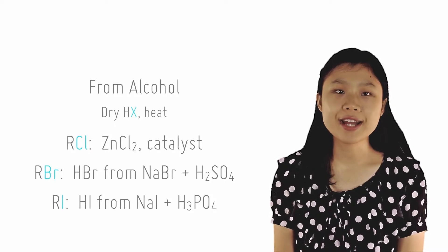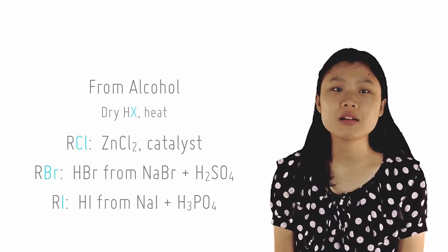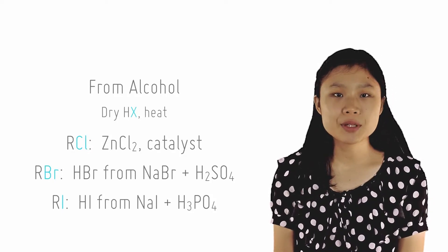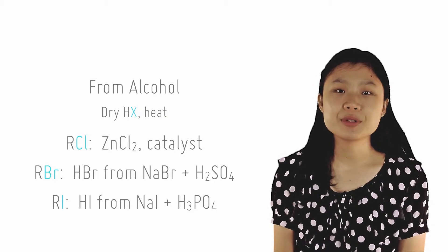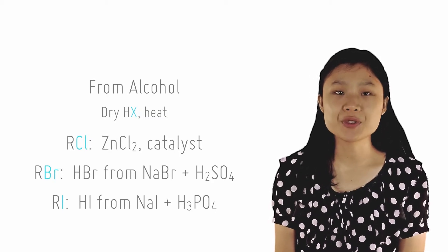Sodium bromide and sulfuric acid are used to produce the HBr that reacts, and sodium iodide and H3PO4, or phosphoric acid, are used to generate the HI.